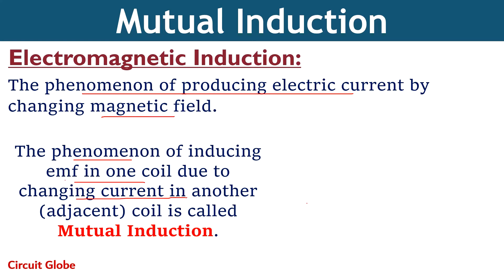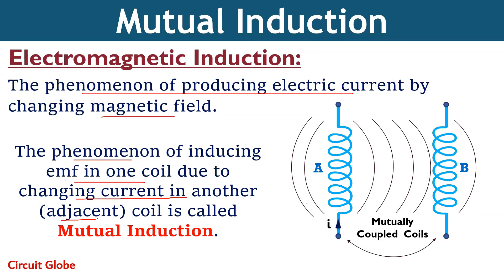Unlike self-induction, which takes place in a single coil of a circuit, mutual induction involves two coils. The coil in which current is getting induced must be present in the magnetic field region of the coil in which changing current is flowing. In the figure shown here, there are two coils A and B. Suppose I is the current flowing through coil A — coil A is the primary coil, while coil B in which induced current will flow is the secondary coil. Due to this current, magnetic field lines will set up and induce current in coil B, known as induced current.